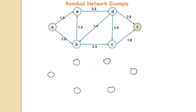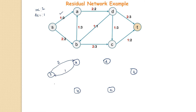Nothing changes in terms of the vertices, so we have s, t, d, c, a, and b. Now what is going to change will be the edges between the vertices. Take the first edge for example: we can increase it from 1 to 3 because capacity is 3 and the flow is just 1, meaning we can add 2 more — so we add a forward edge of 2. We can decrease it from 1 to 0, so we add a backward edge of 1.